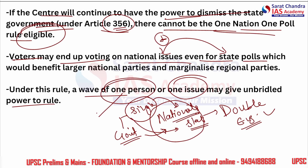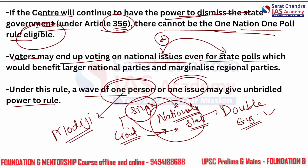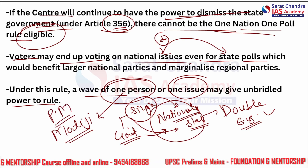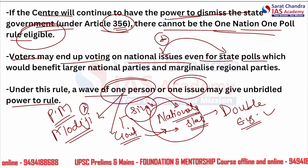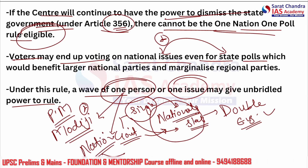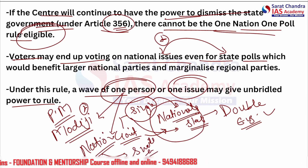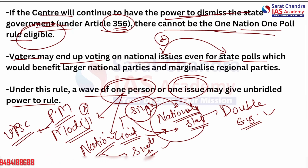This is hinting at Modiji, the current Prime Minister of India. The opposition is saying that because of his charismatic attitude and a penchant towards solving national issues, he may also gain popularity in smaller states during their polls. So the opposition is not very happy with this, but for UPSC purposes, just note: under this rule, a wave of one person or one issue may give unbridled power to rule.